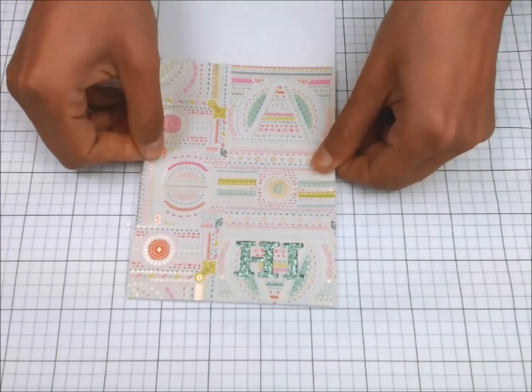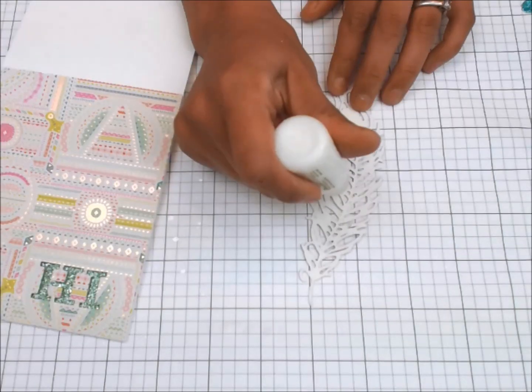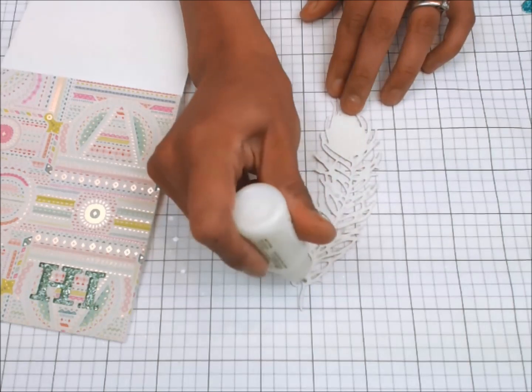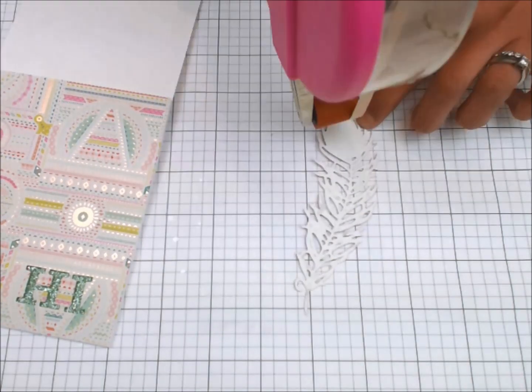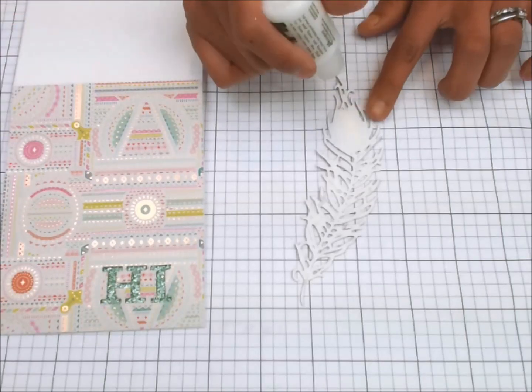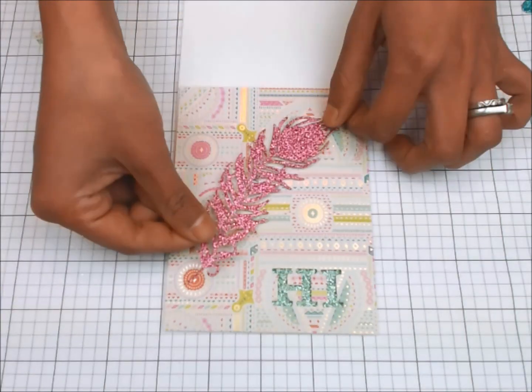I hope you comment to be eligible to win stamps, dies, embossing powders, and more. The giveaway is open worldwide and the winner will be announced on the Love From Lizzie channel during the October card kit unboxing on September 19th.